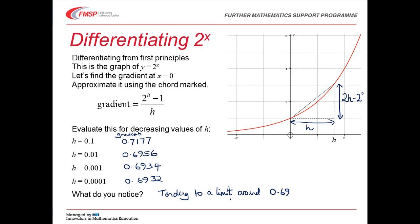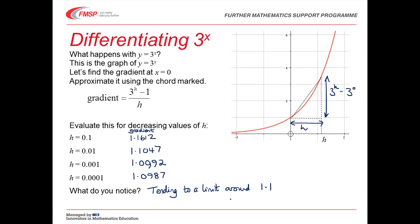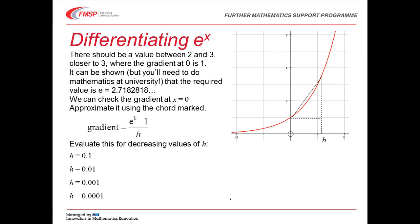So, if we differentiate 2^x at 0, we get 0.69, and if we differentiate 3^x, we get 1.1. There should be a value between 2 and 3, closer to 3, where the gradient at 0 is 1. And it can be shown, but you'll need to do maths at university in order to do this, that the required value is e, 2.7182818. e is a number rather like pi. It's not the solution of any nice equation, so not only is it irrational, but it's also what's called transcendental. And e is defined to be the special number for which this is true, that when you differentiate it at 0, you get 1. In the same way that pi is defined to be the ratio circumference over diameter of a circle. The challenge is working out the values of pi and e as decimal numbers.